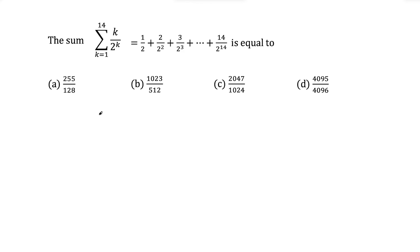What's up? I'm Vin and I'm going to solve this summation question. This question was from a high school math competition and no calculator was allowed. We have the sum from k equals 1 to 14 of k over 2 to the k power, and this is the expanded form.